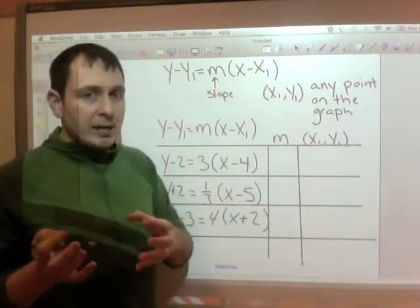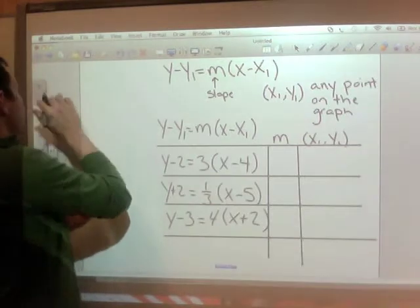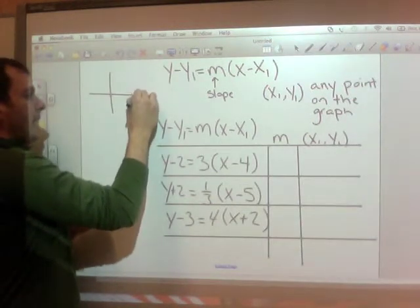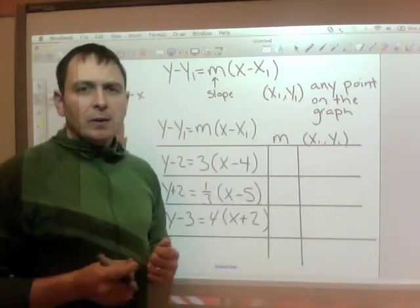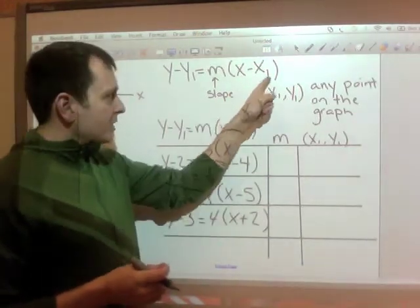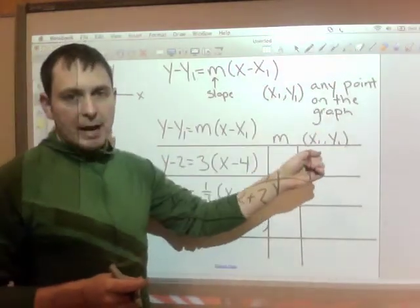And x and y, just like before, x and y are placeholders. X and y tell us that we are on an x, y grid. So that's our y and our x. The only ones that are new here are this x1 and y1. And x1, y1 is any point on the graph.